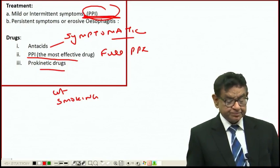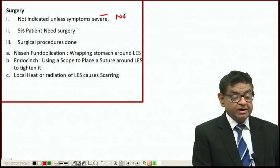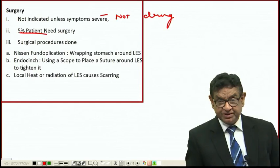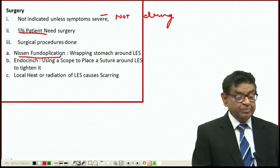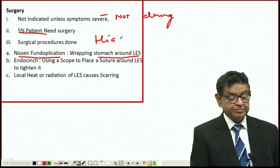Surgery is not needed unless symptoms are very severe and not controlled by drug therapy, and the patient has severe problems. Only 5% of patients need surgery. The surgical procedure is Nissen fundoplication, wrapping the stomach around the lower end of the esophagus, especially when the patient has hiatus hernia.